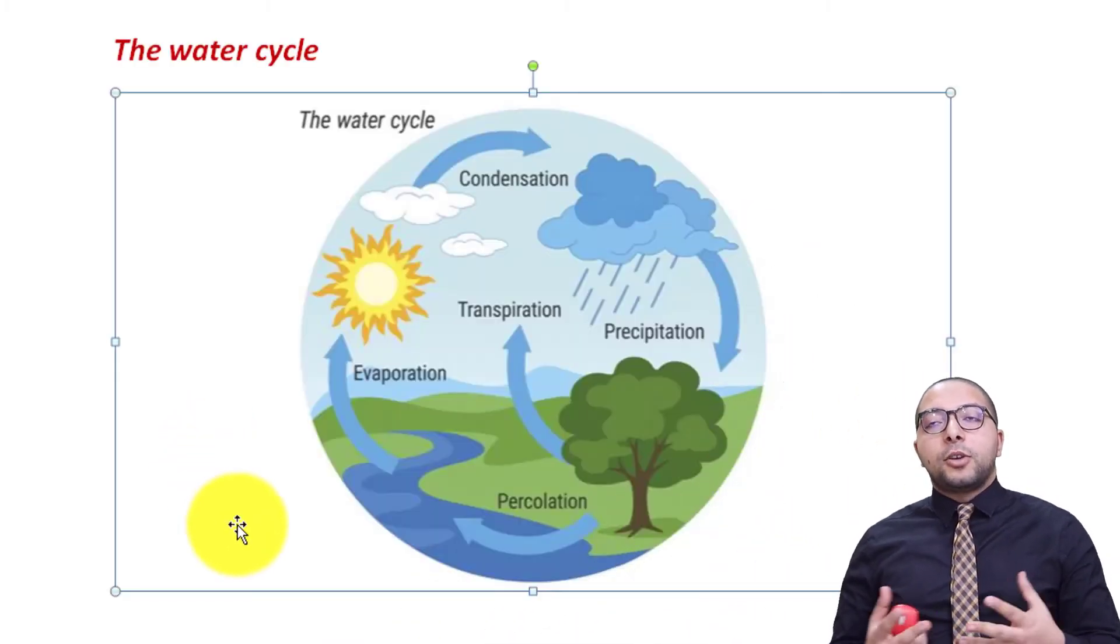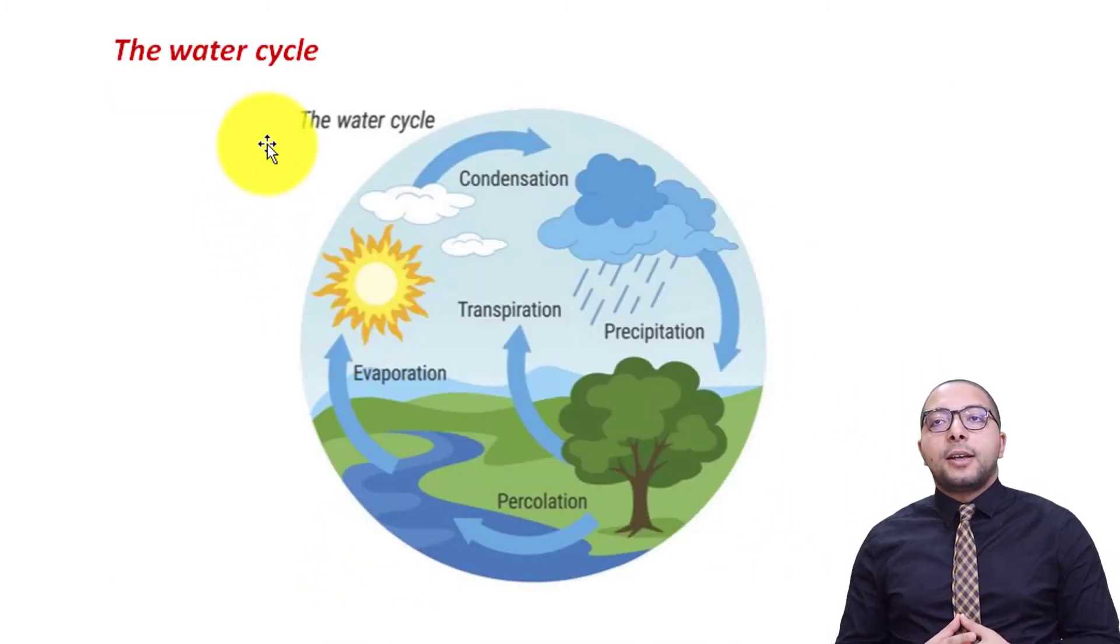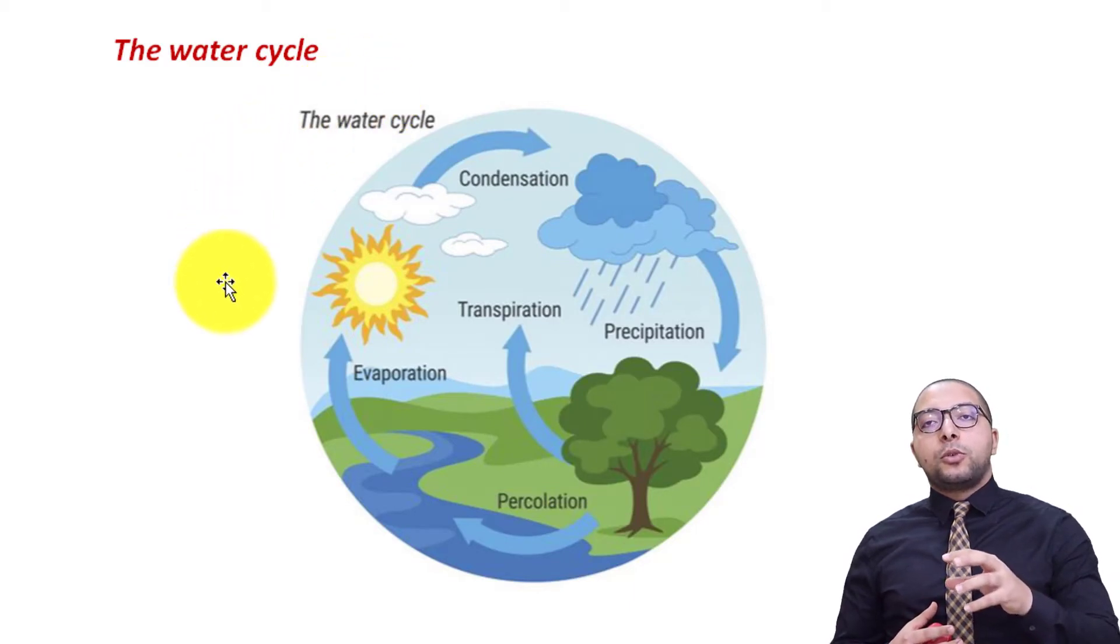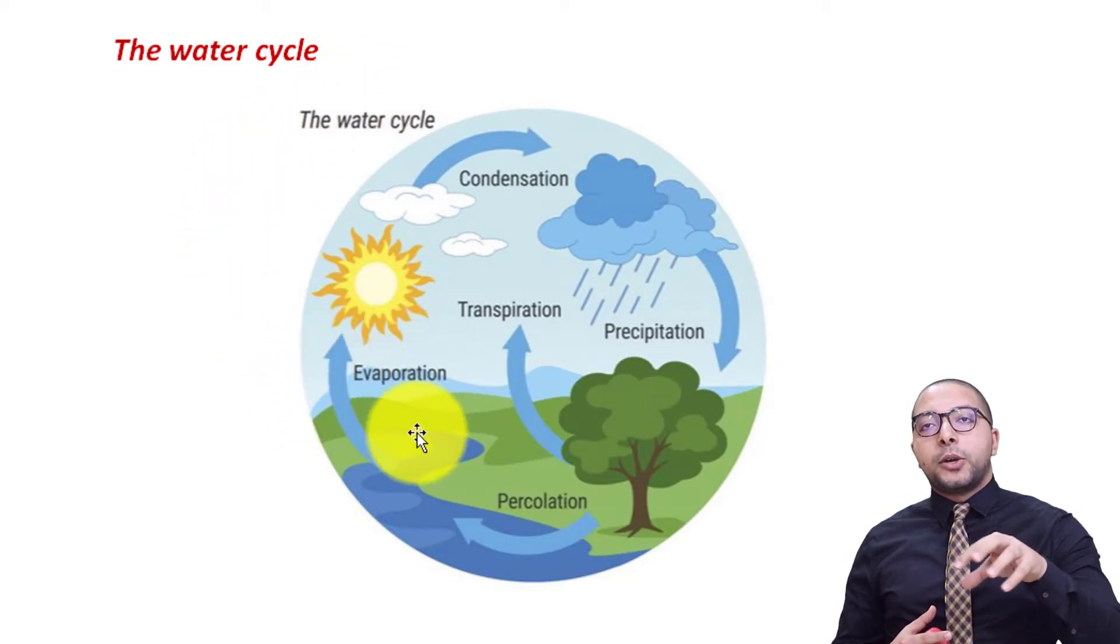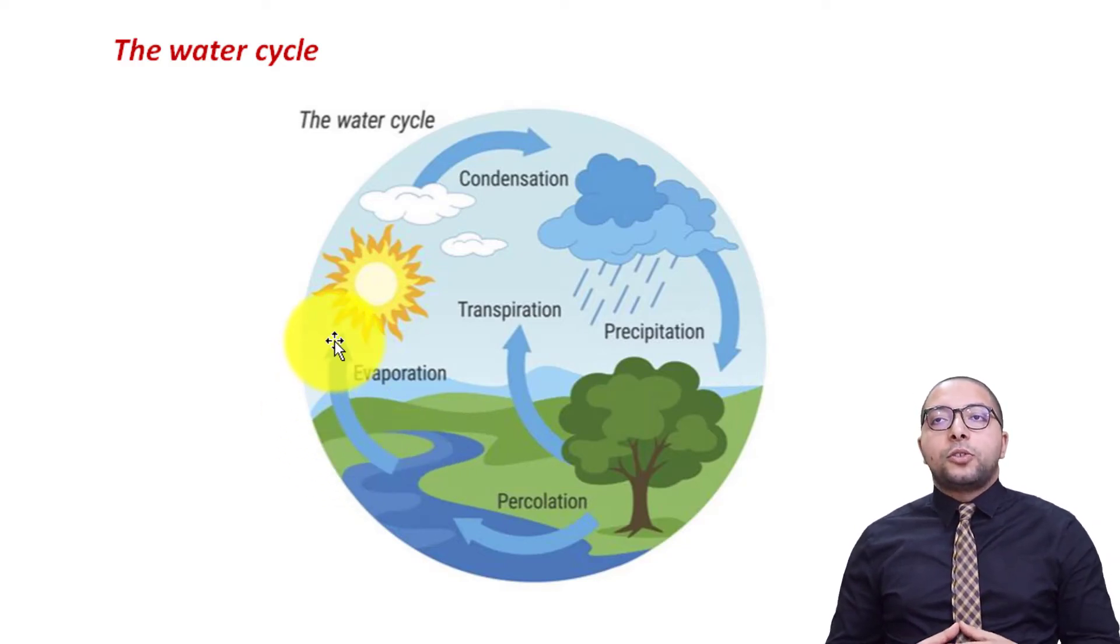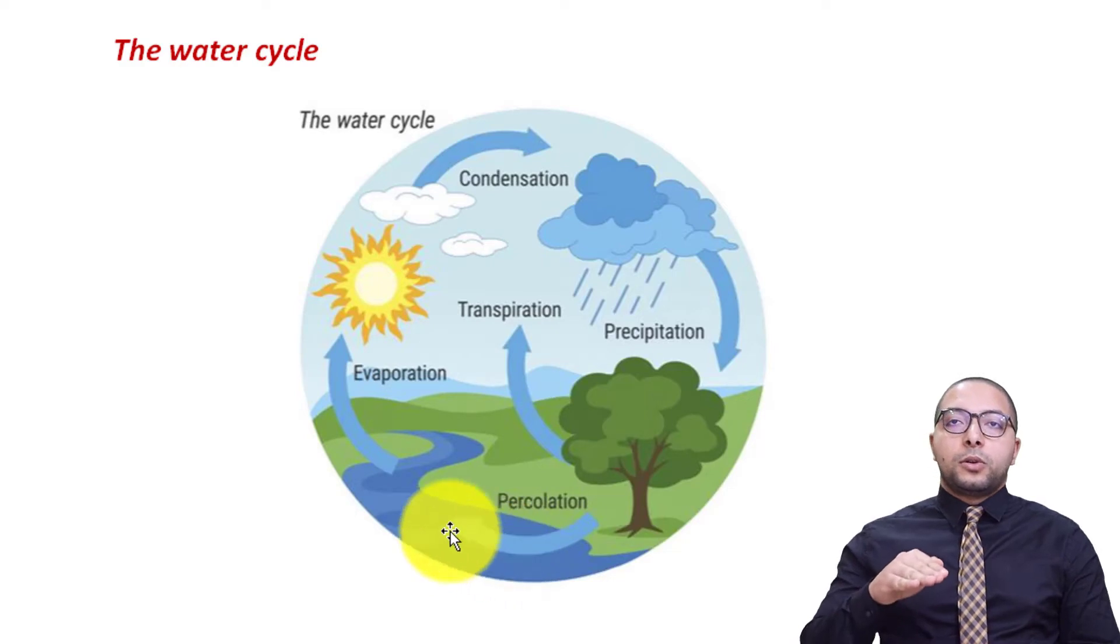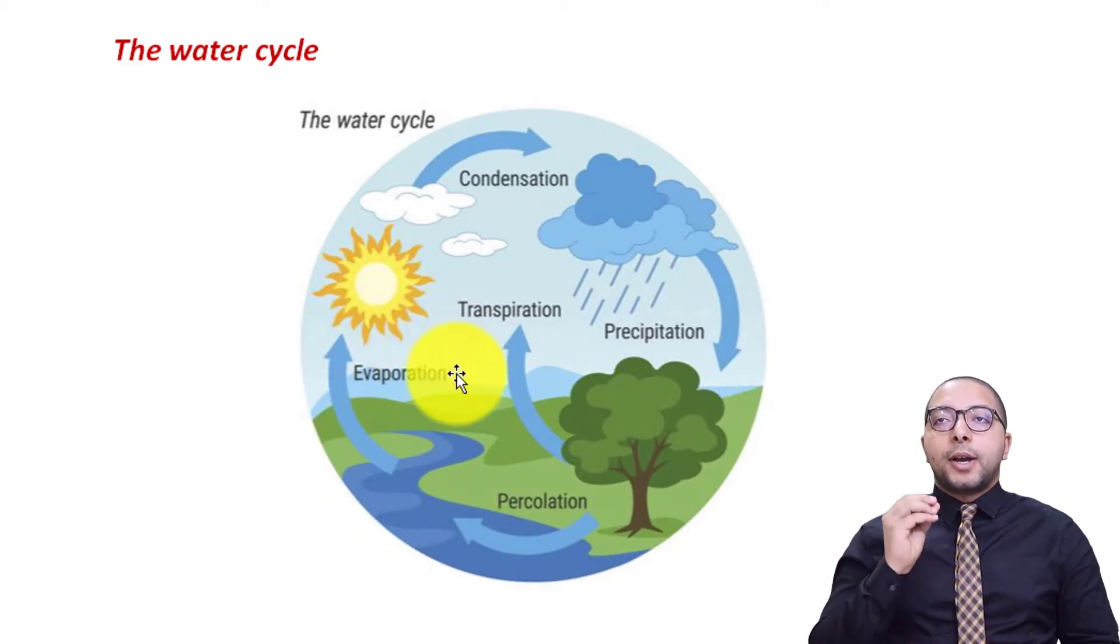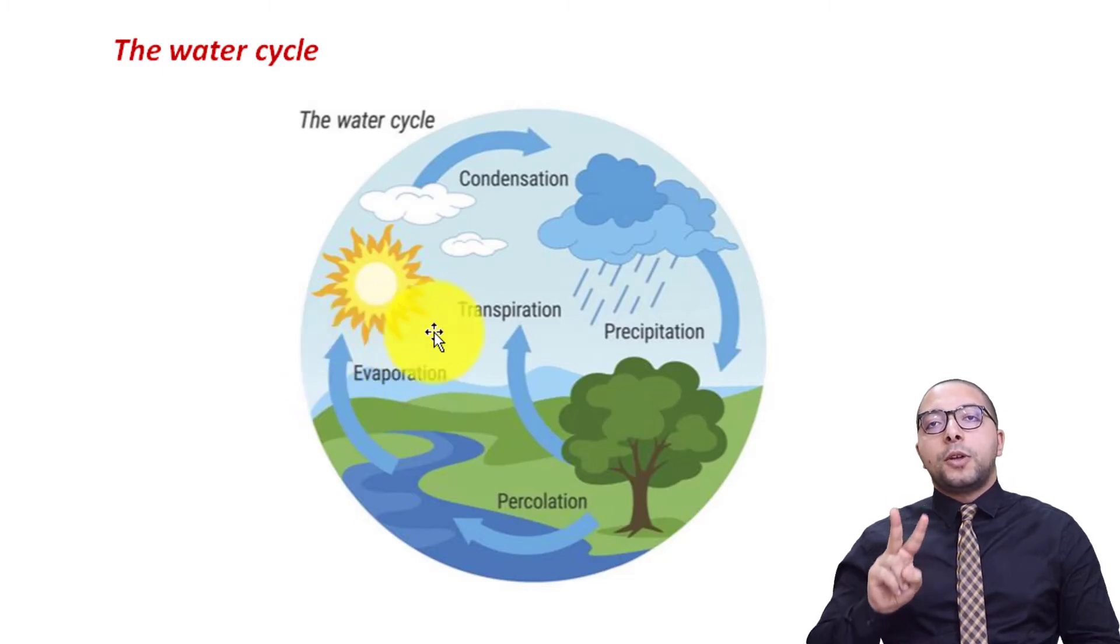So we're starting today's lesson with the first cycle which is water cycle. As you can see in the picture water cycle has like few steps or few processes in which the water is going to cycle from the earth toward the atmosphere and then back from the atmosphere toward the earth. We're starting with the water on the earth. Water on the earth are going to change from liquid form into a gas form by the help of two different processes.